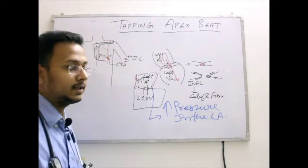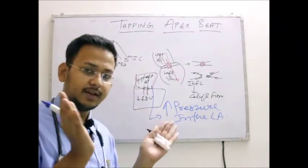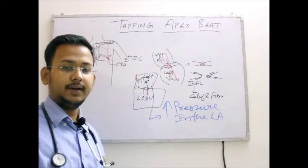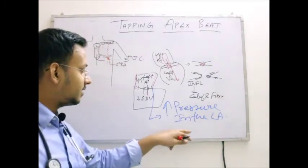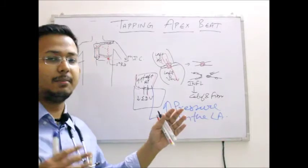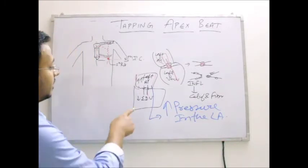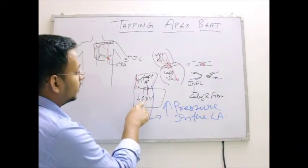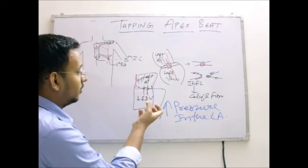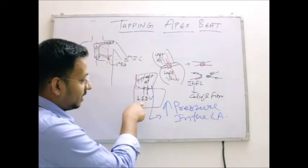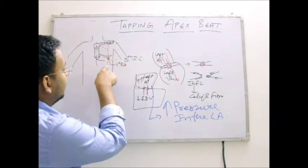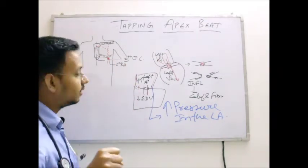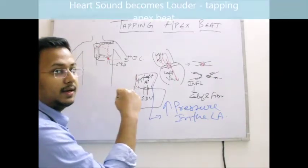This will eventually lead to increased pressure in the left atrium. It's very logical — more pooling of blood means more hydrostatic pressure. So there would be more increased pressure in the left atrium. This is the cause of the tapping apex beat. There would be low ventricular contraction due to the lesser amount of blood pooling into the left ventricle.